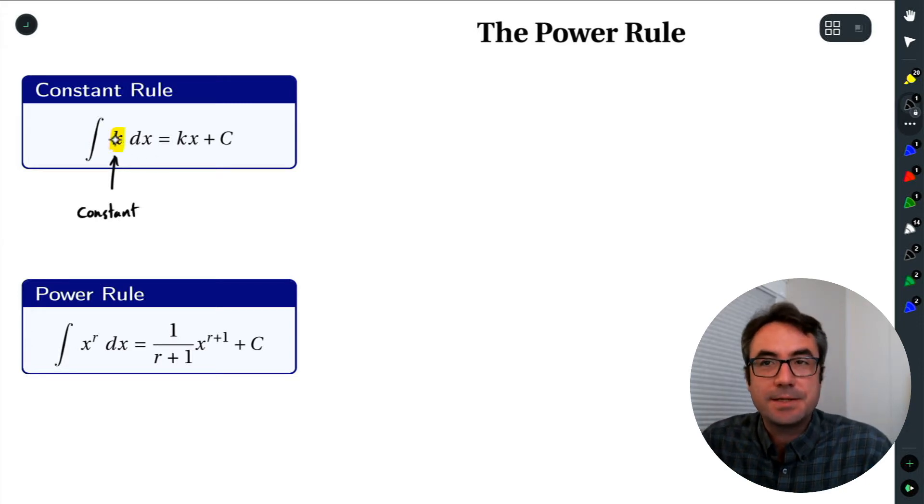And then, how do we find the antiderivative? Well, the antiderivative of this constant function k is k times x, and then we throw our plus c on at the end.